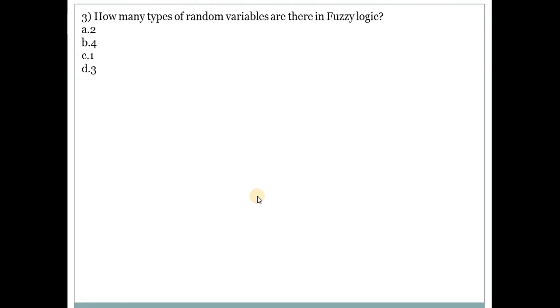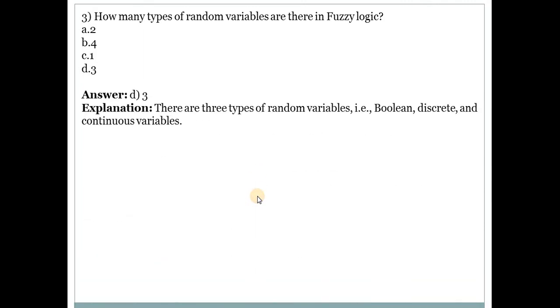How many types of random variables are there in fuzzy logic? Answer is D, that is 3. So there are 3 types of variables: Number 1 is Boolean, Number 2 discrete, and third is continuous variables.